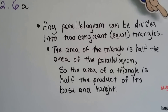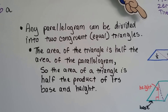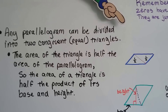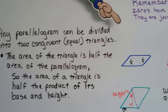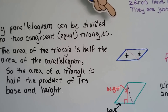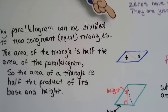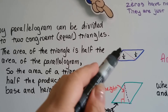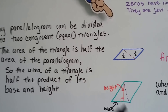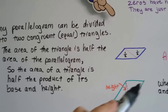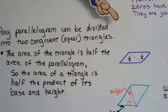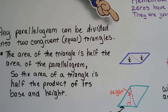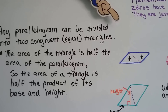Any parallelogram can be divided into two congruent equal triangles. The area of the triangle is half the area of the parallelogram. We can cut it in half just by going across to the vertexes. So the area of the triangle is half the product of its base and height.